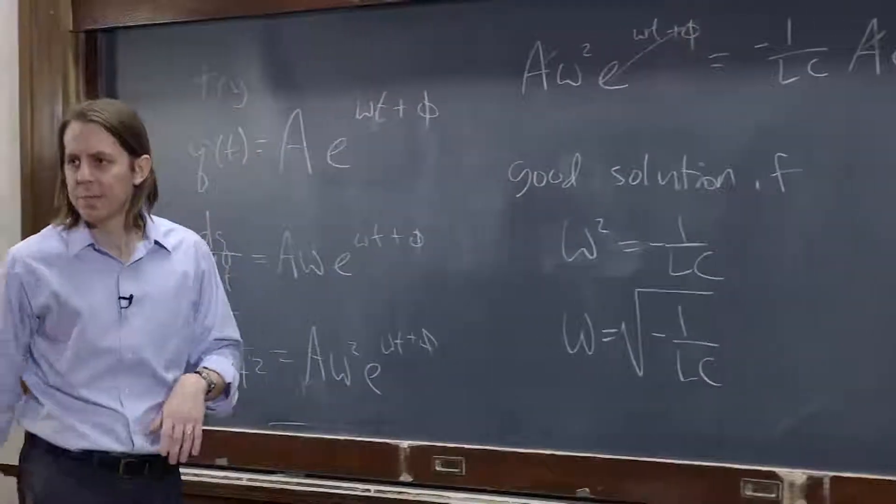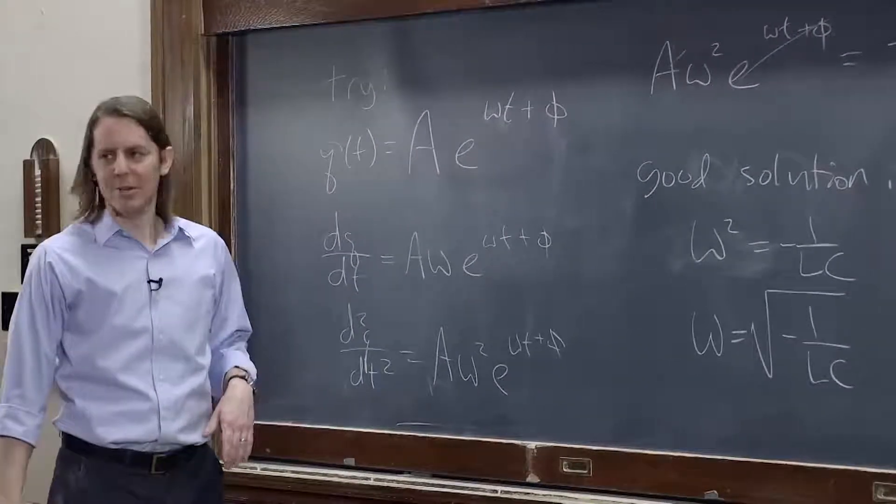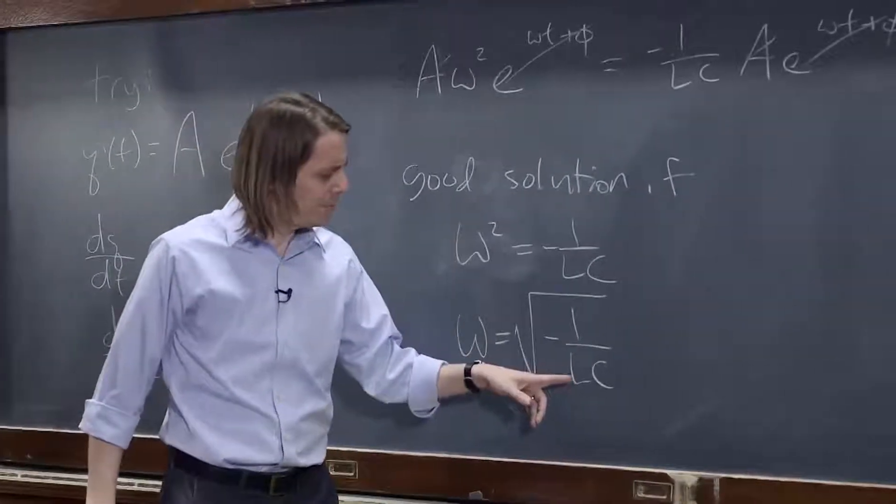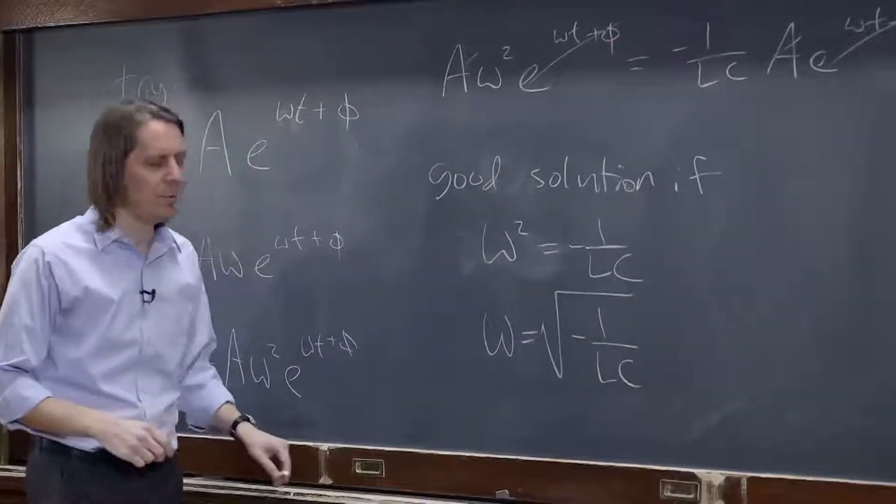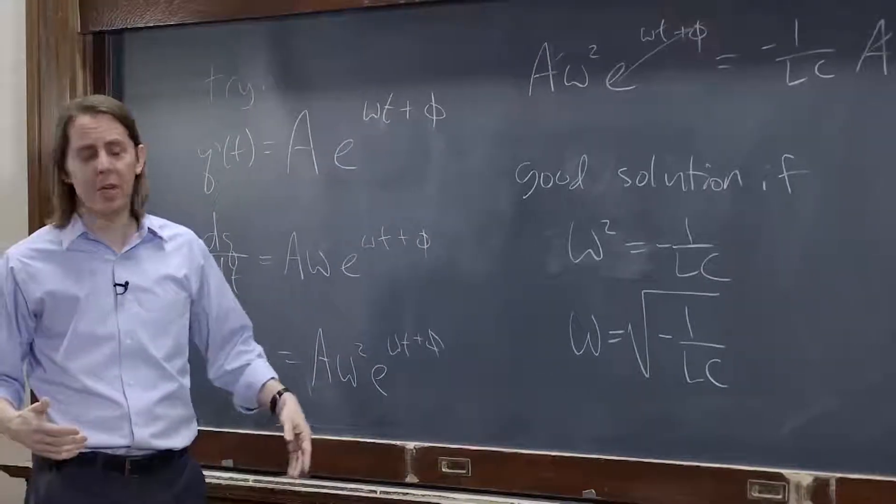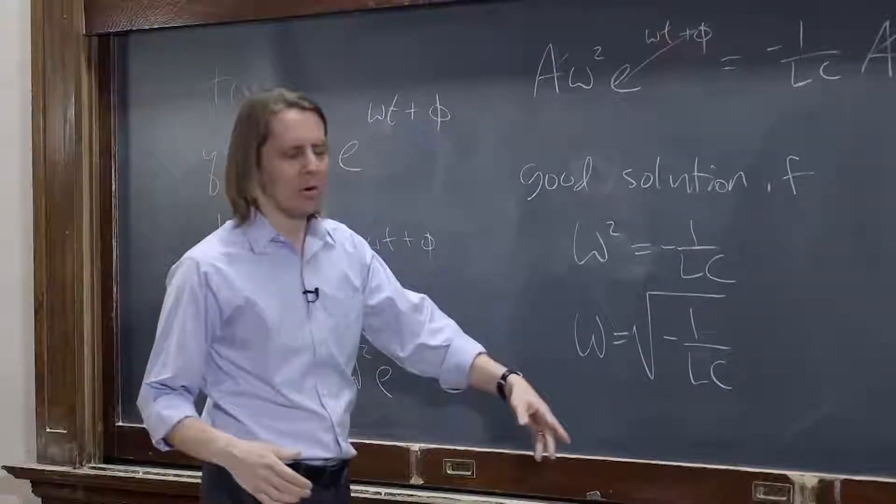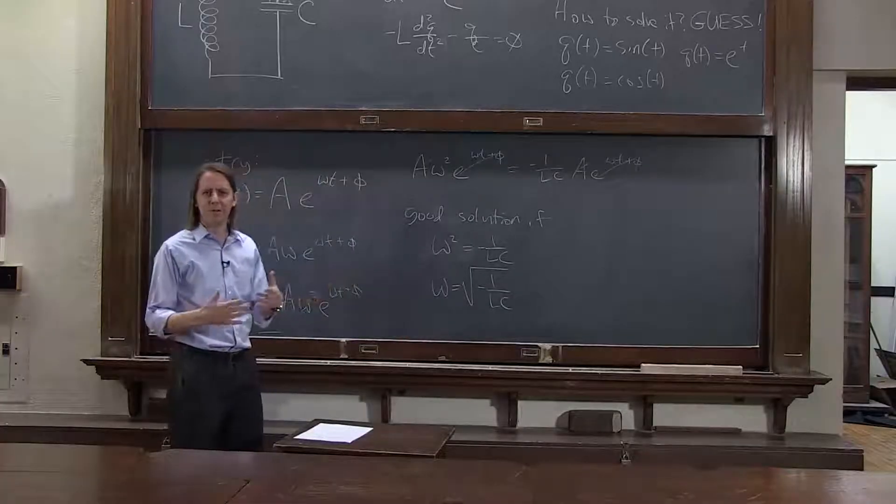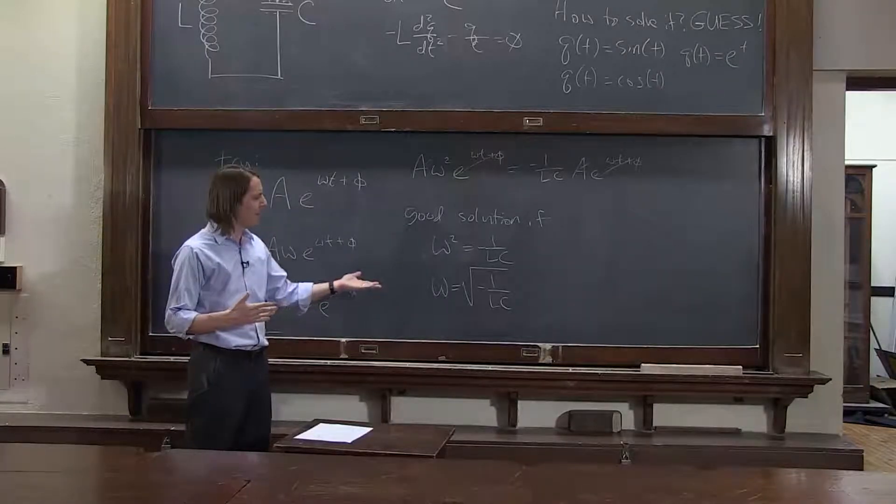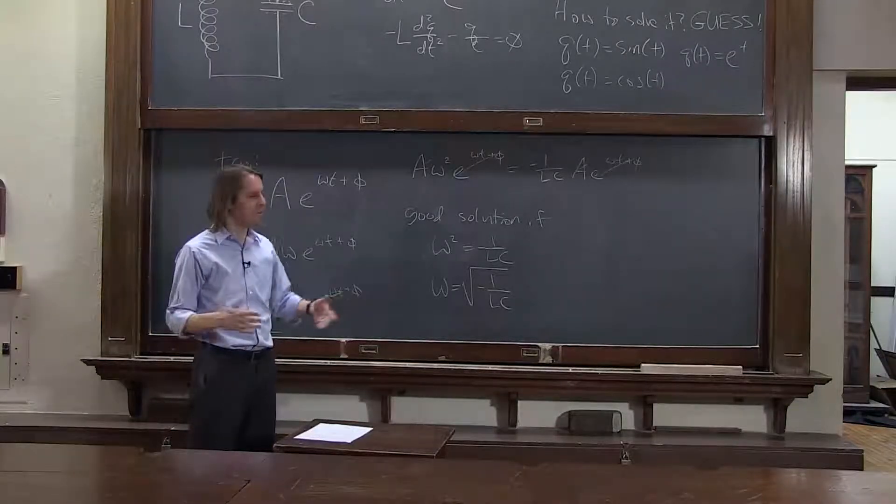But wait a minute, we know that l is going to be positive and c is going to be positive and one is positive, so we've taken the square root of a negative number. You can never take the square of a negative number, that's an imaginary number, so we can't have an imaginary number in our solution.